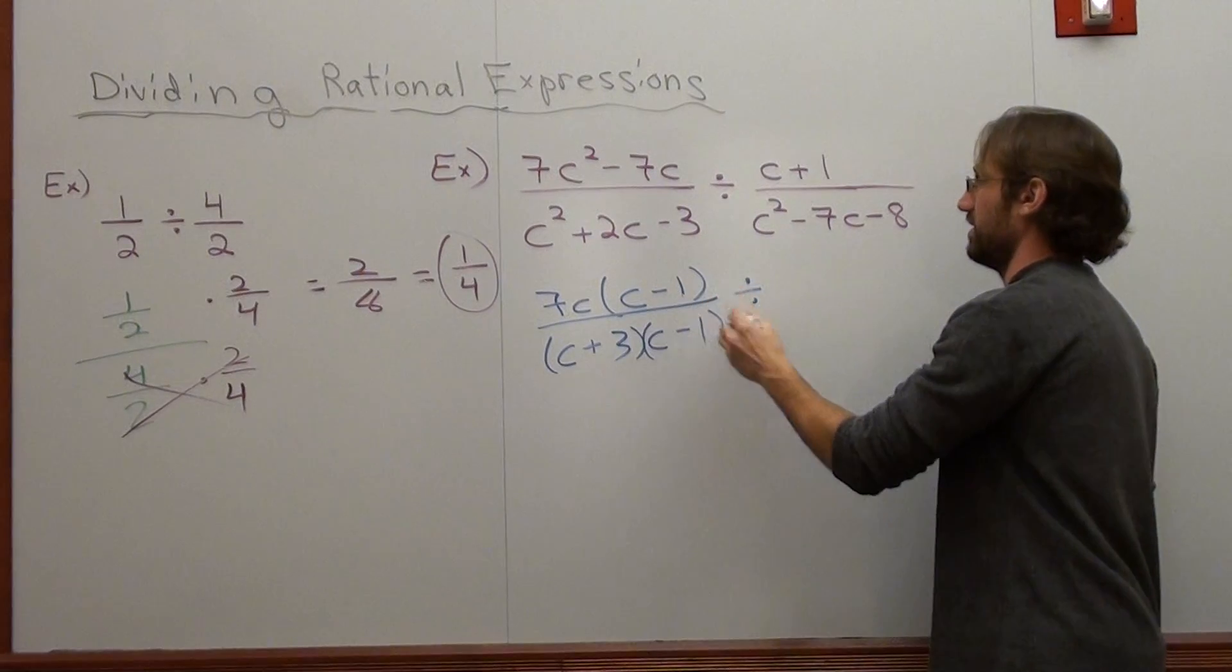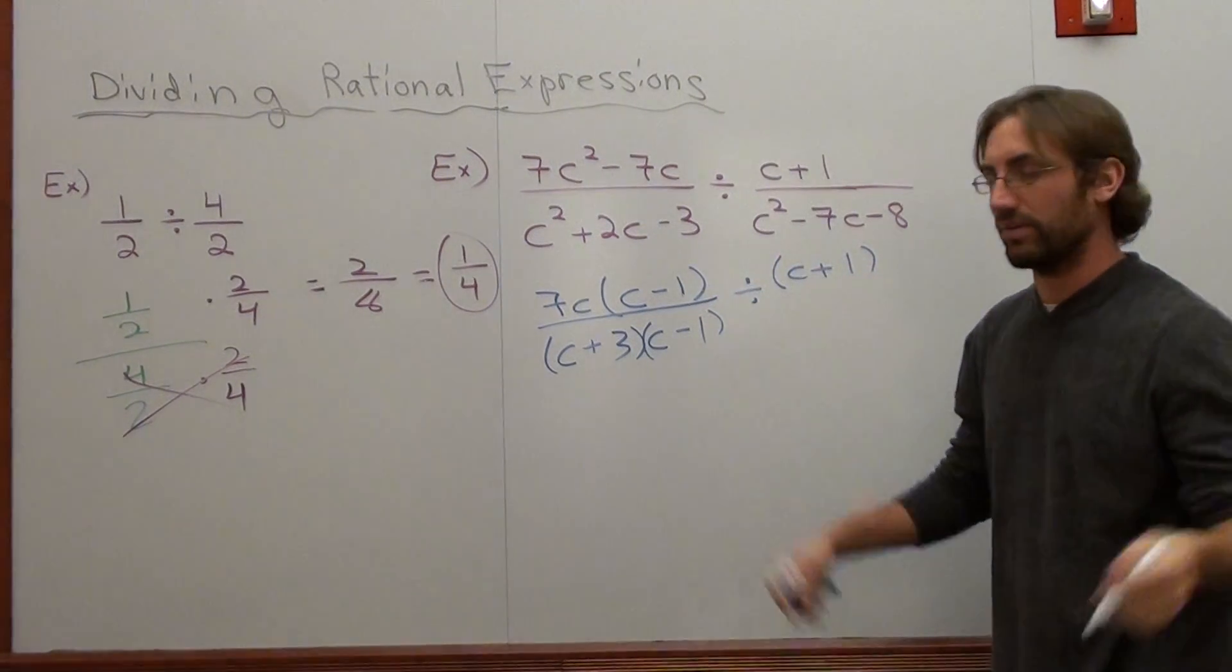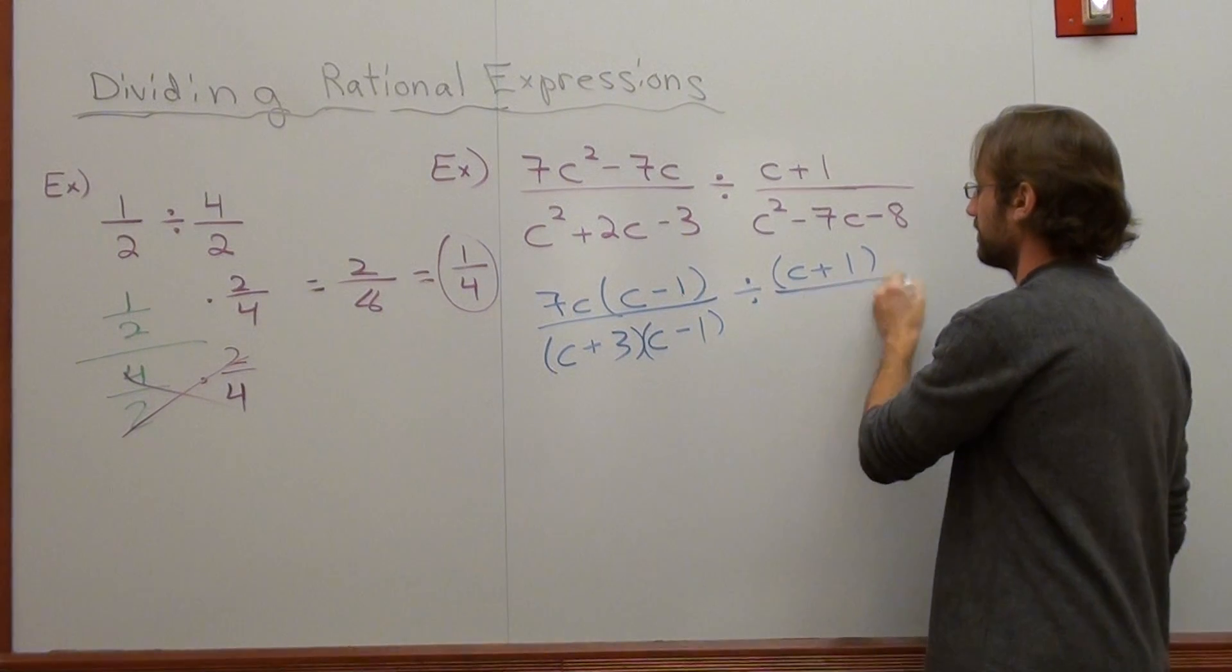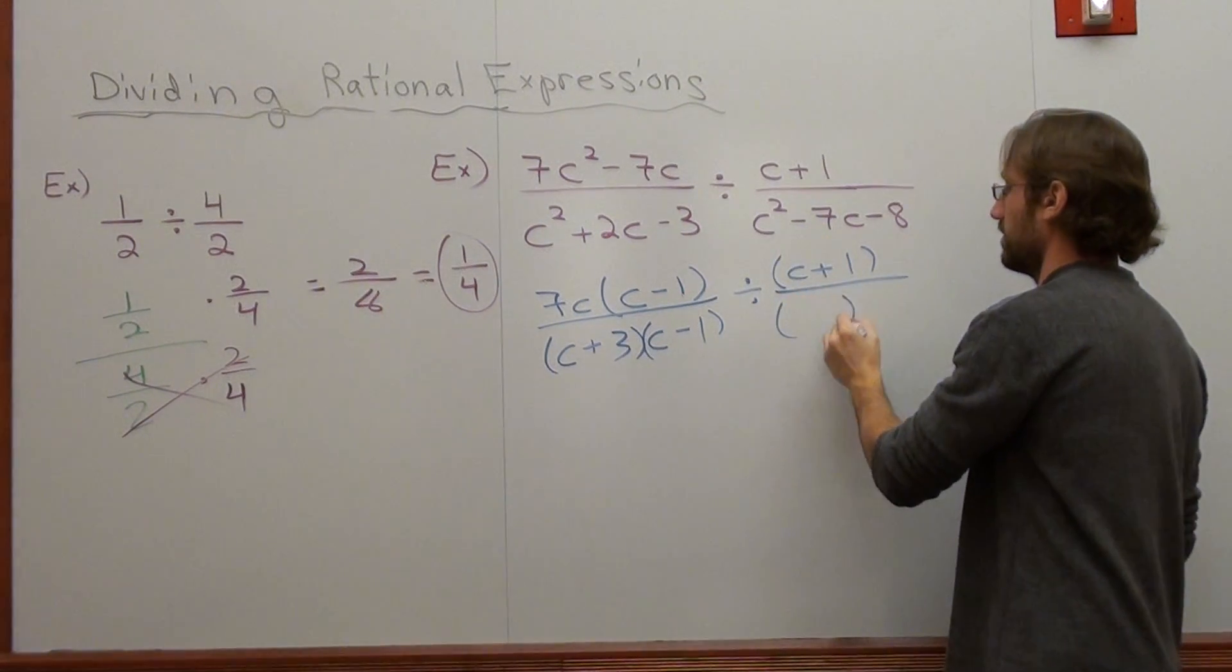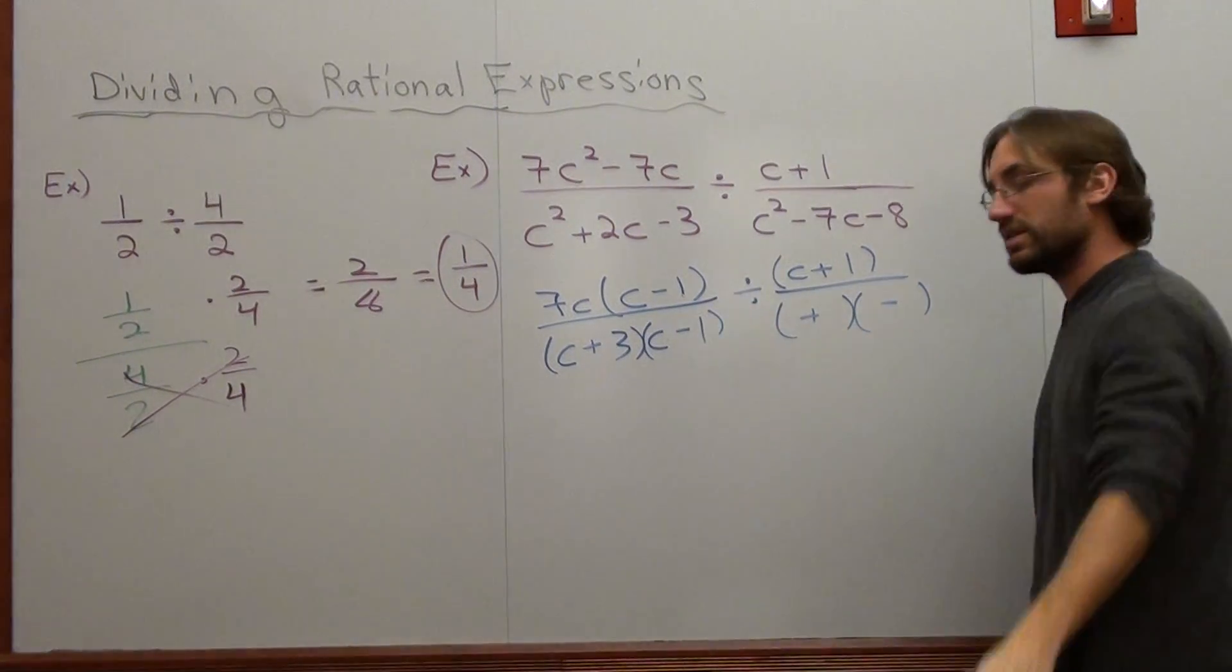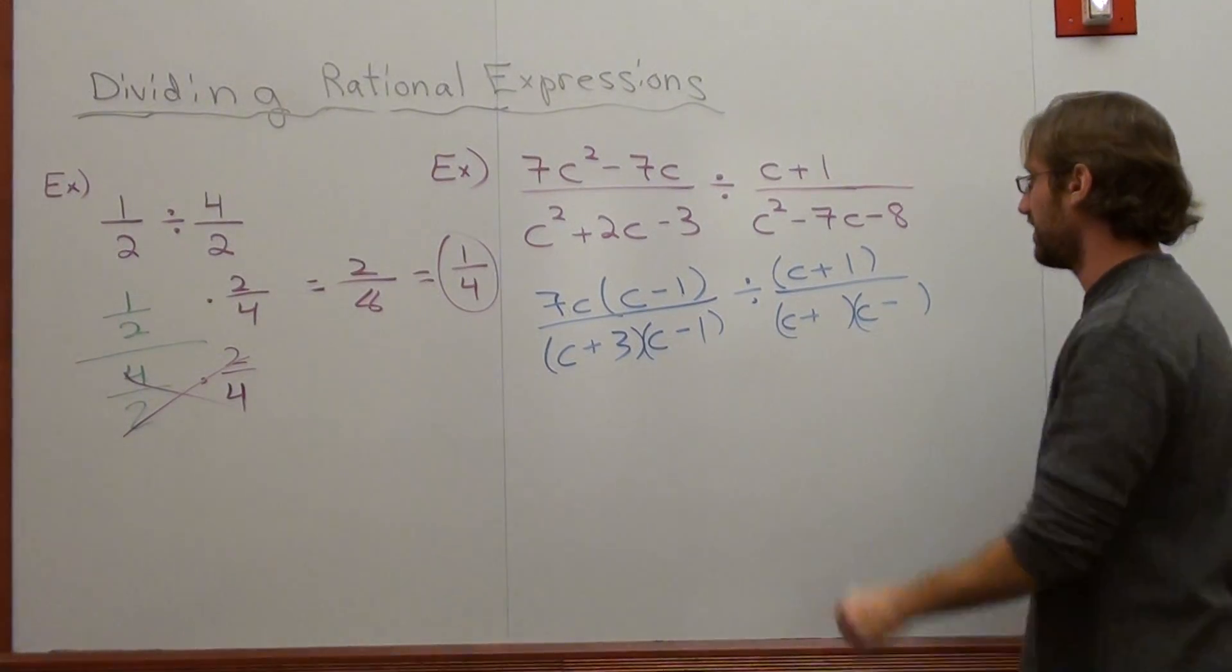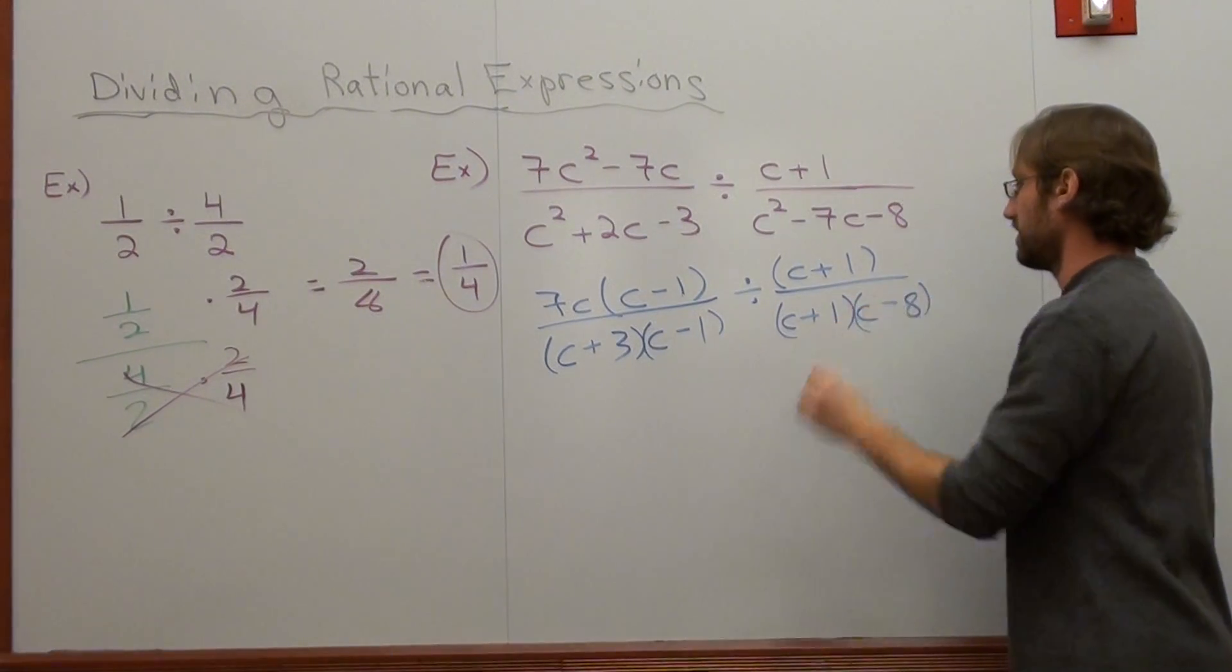Now, I'll just leave it as a division. Put parentheses around the c plus 1, because that's all I can do with it right now. Now, this factors to a positive and a negative. c times c is c². 1 times what is negative 8, but adds up to be negative 7. That's plus 1, negative 8.